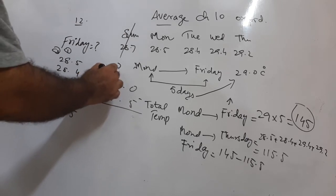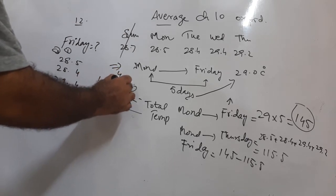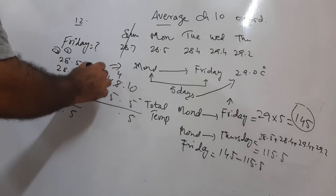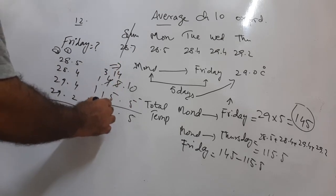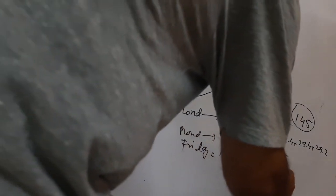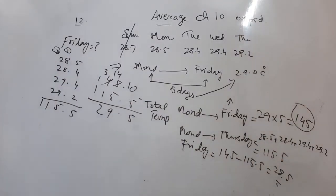So 145 minus 115.5 gives 29.5. The temperature on Friday is 29.5 degrees Celsius. This question is slightly different from others, so you need to be careful.